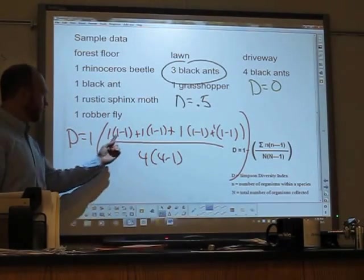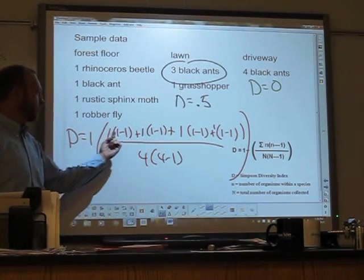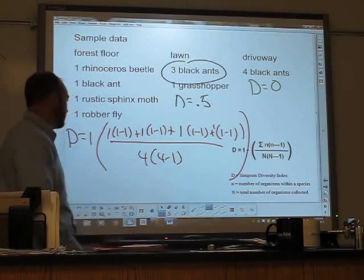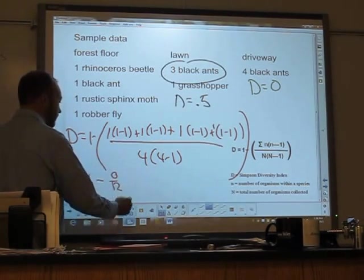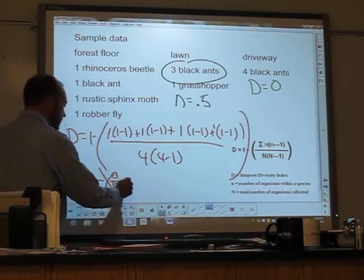Now, I think you should see one minus one in each case is zero. One times zero is zero. So on the top, I get zero. So what I have here then is one minus zero over twelve, which is one minus zero, which is one.